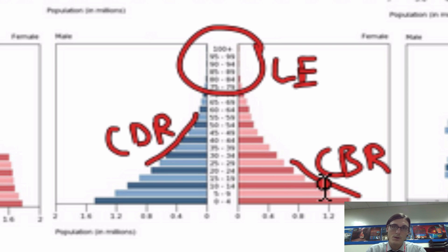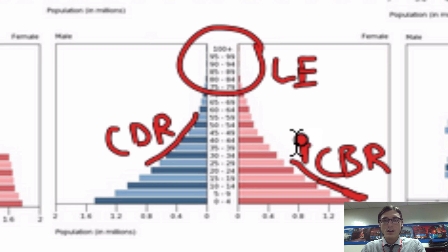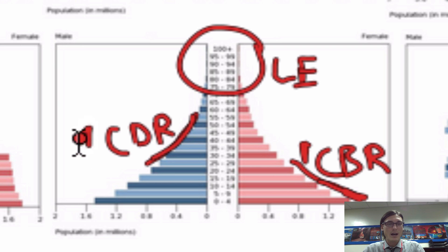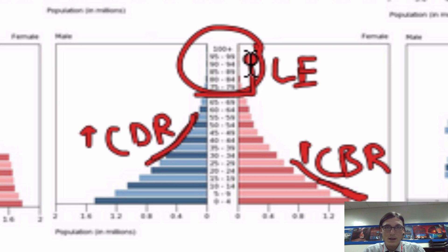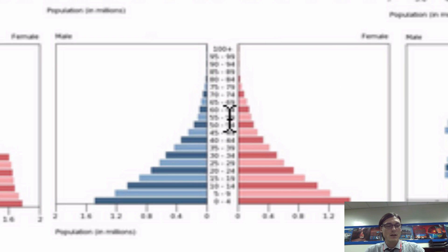On this population pyramid, you can see that it's got a really wide base, which indicates a high CBR. It has concave sides, which indicates a high CDR, and at the peak you can see there are not many people in the older age cohorts. That means that this is a low life expectancy.